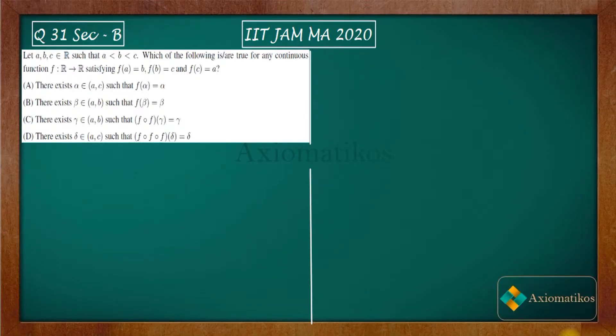Hello dear students, welcome to ExeoMatic course. This video is part of the solution series for IIT JAM 2020. We are here with problem 31, which is a problem of section B, meaning more than one answer may be correct.